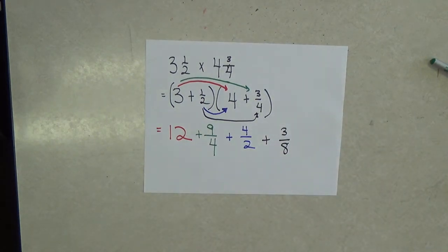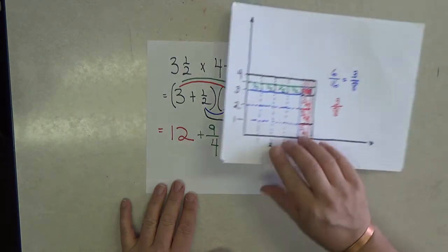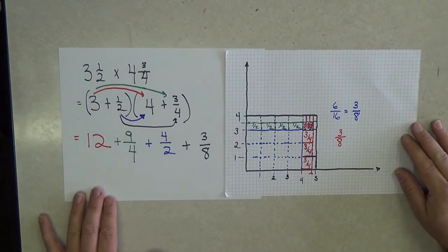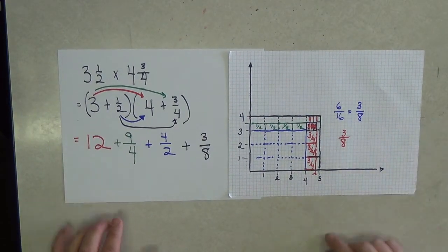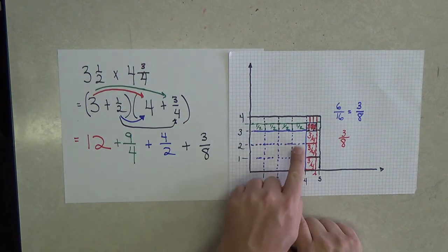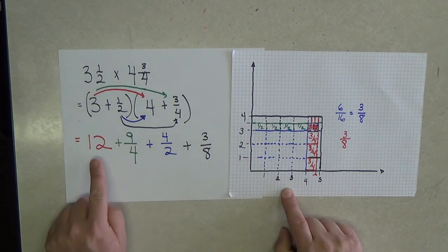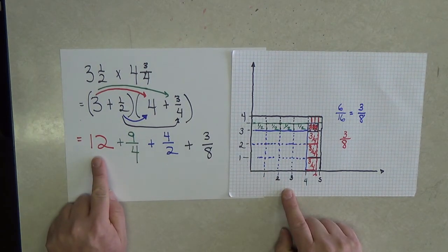Now if those numbers look familiar from the previous problem, it's because these are the same amounts that we saw when we did the problem using the rectangular array. Notice, the 12 was found here. It's the whole number times whole number.